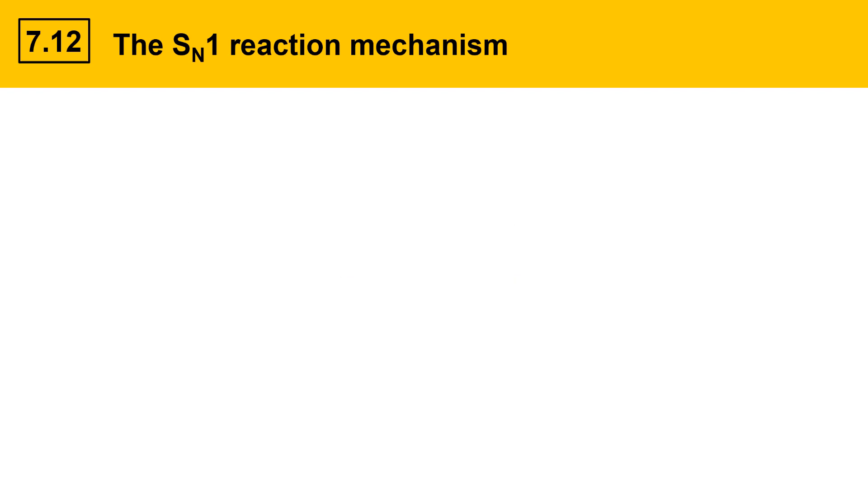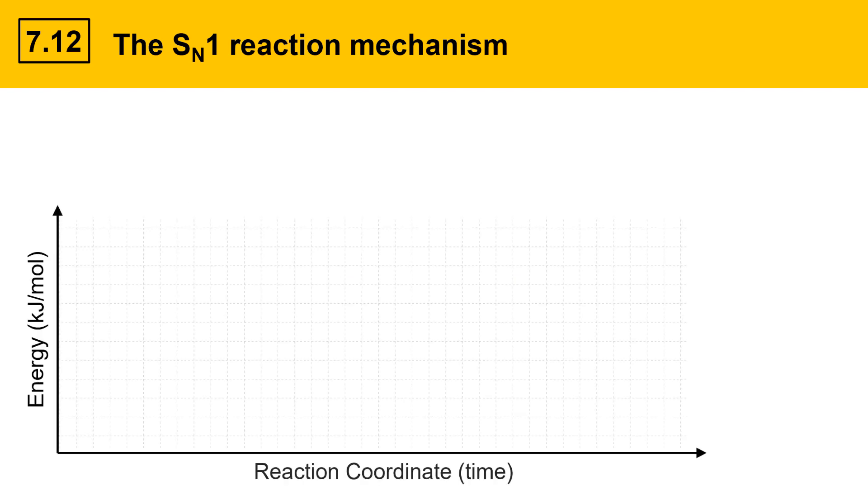This is a difference from SN2. We can graph the energy changes that happen in an SN1 mechanism where reaction coordinate, or time, is on the x-axis and energy is on the y-axis. And here I've chosen to use kilojoules per mole as my unit for energy.